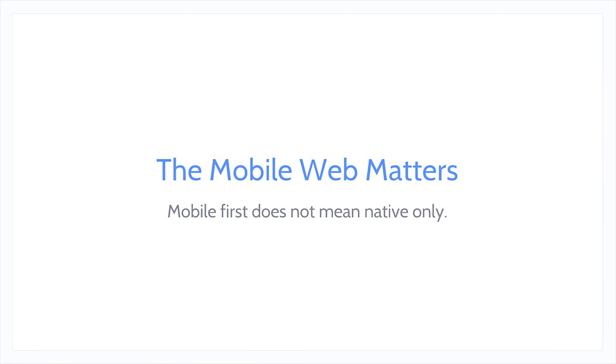My name's Nate Schloss, and I'm a software engineer at Facebook. I worked on Facebook's web push implementation and on Facebook's use of new JavaScript technologies available in the browser. As a mobile-first company, the mobile web is a key part of our overall strategy. Mobile first does not mean native only — you can't have a complete mobile strategy without investing in both the mobile web and native.